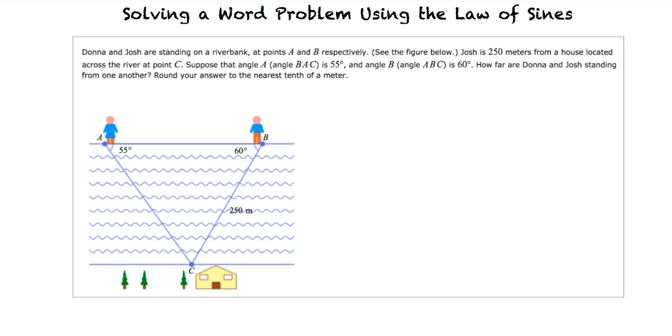We are given the following problem to solve. Donna and Josh are standing on a riverbank at points A and B, respectively. Josh is 250 meters from a house located across the river at point C. Suppose that angle A is 55 degrees and angle B is 60 degrees. How far are Donna and Josh standing from one another? Round your answer to the nearest tenth of a meter.